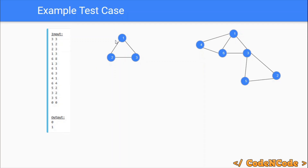The prerequisite for this problem is the articulation points lecture that I have already explained in the graph theory playlist part one. I will be posting the link to that playlist in the description of the video, so if you haven't seen that lecture, go watch that first and then continue.